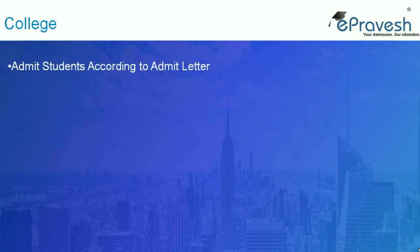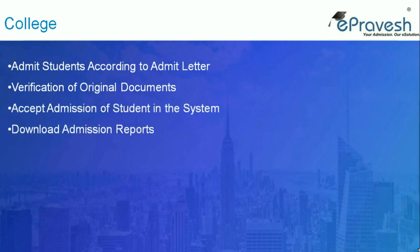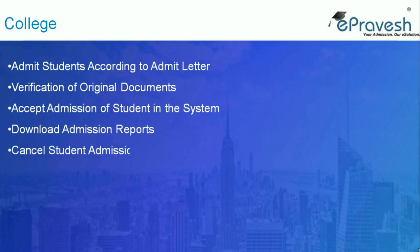The next entity is the college in the centralized admission process. College can admit students based on the admit letter, and each college has a unique login for the centralized admission system. College admin needs to admit and accept students. Admission cancellations are also updated in the central system to keep track of vacant seats for a particular college or stream. College admin can download admission reports for each day as well as cumulative reports.